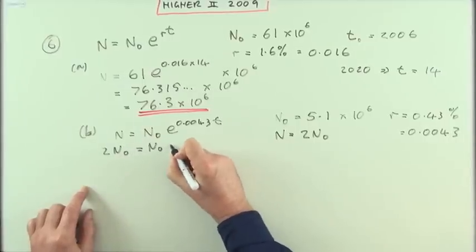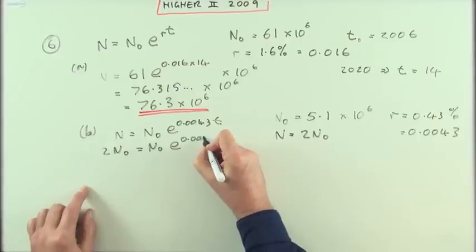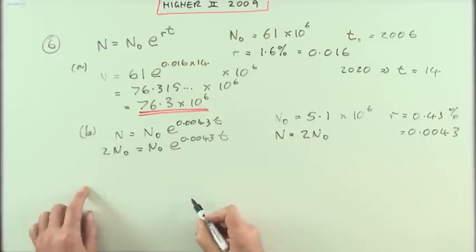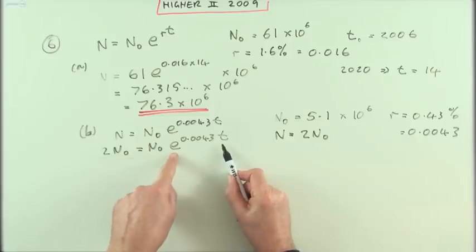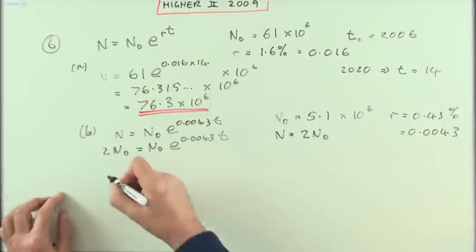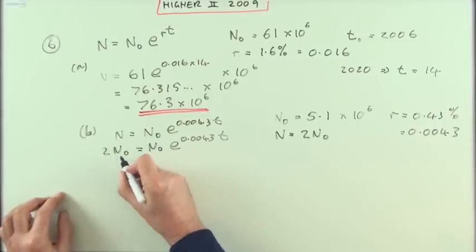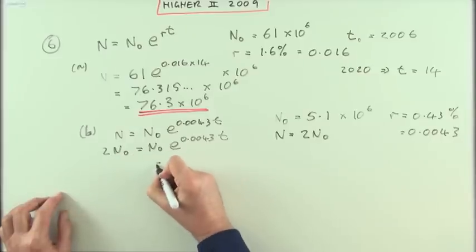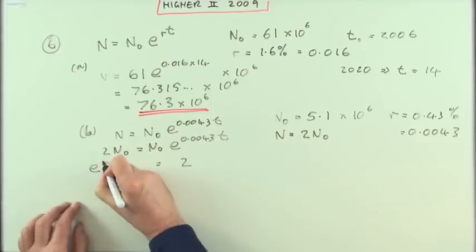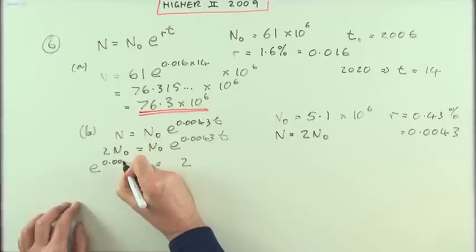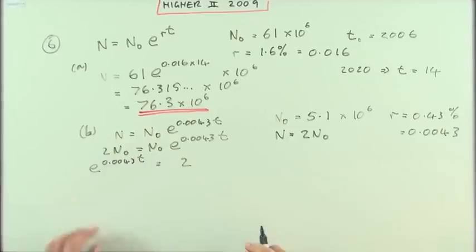Two times N0 is N0 e to the 0.0043t. Now it's t that I want. There's only one mention of t. So I can solve this linearly just by getting rid of all the bits I don't want. Get rid of the N0, get rid of the e and then get rid of this decimal. So maybe I'll put it around the other way first of all. So get rid of the N0 would make that equal to 2. I'll just put the 2 in this side reading it this way. So I've got e to the 0.0043t equals 2.